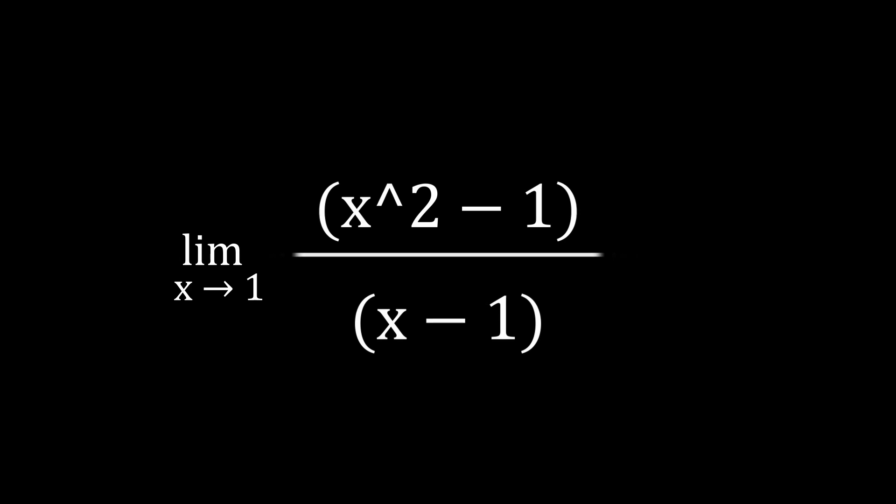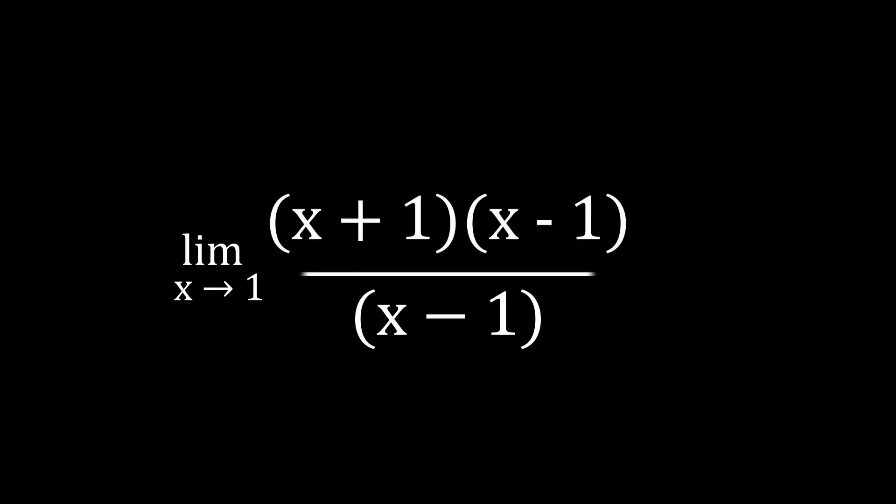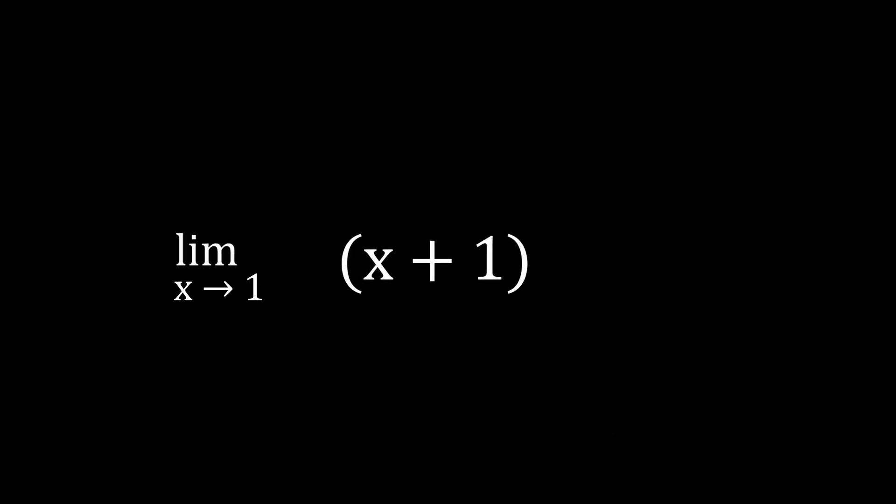The factoring method essentially completes the division which in turn eliminates the division by zero error. Let's continue on that demonstration from earlier. We can use the difference of two squares rule to factor the top, then divide the x minus 1. We're left with a clean x plus 1, which is no longer indeterminate at x equals 1.